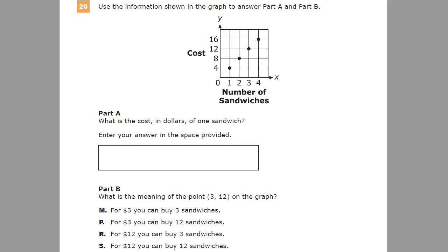This is a grade 7 math practice test for TN Ready. On this version of the test, this is question number 20. Use the information shown in the graph to answer part A and part B. So we have the graph.